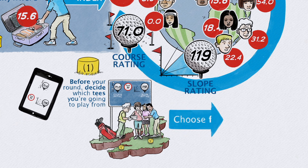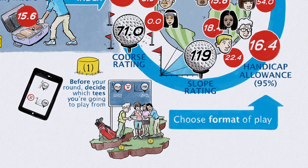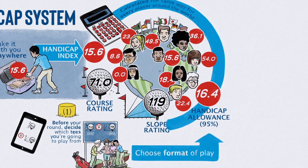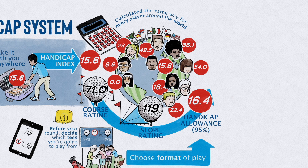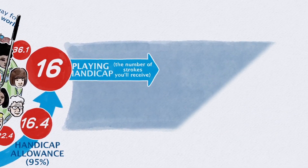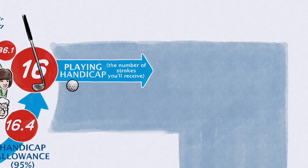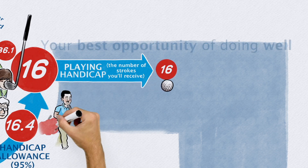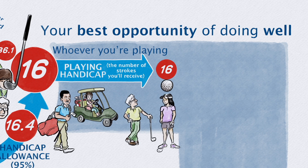Next, decide the format of play. This will determine the handicap allowance you will be given. Together, the course rating, slope rating and handicap allowance convert your handicap index into a playing handicap, representing the number of strokes you'll receive for the round, providing you the best opportunity of doing well, whoever you're playing.